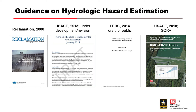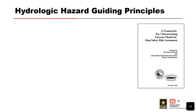There are a number of guidance documents that help in guiding how to develop hydrologic hazard estimation. Shown here are four different examples: a Reclamation document, a USACE document, a FERC document, and another USACE document from 2018. The Nuclear Regulatory Commission, TVA, and other agencies have similar documents as well. The 2018 USACE document can be found on the RMC website under publications and is widely used to advise on how to perform this type of analysis.